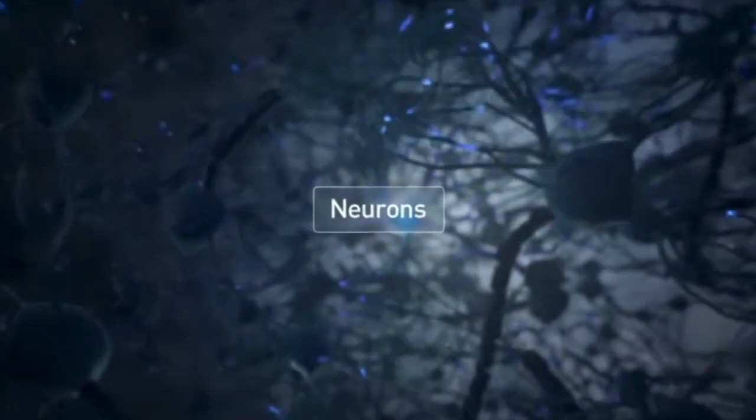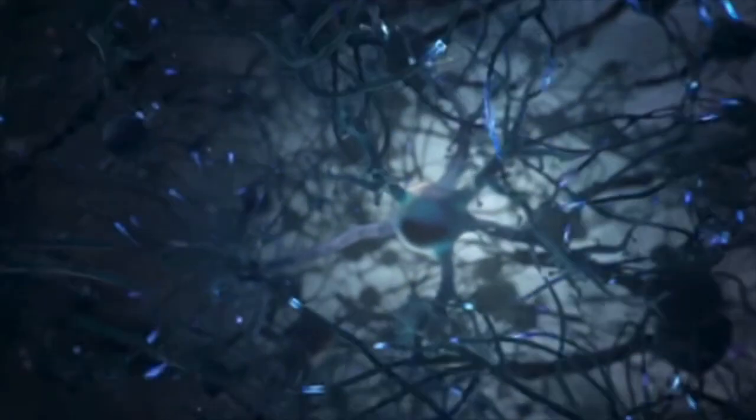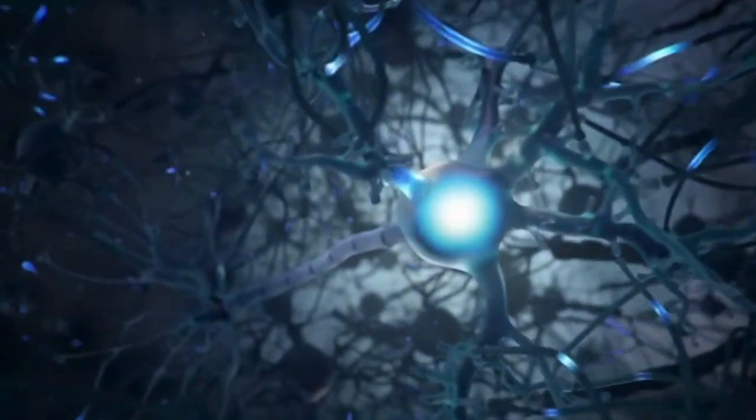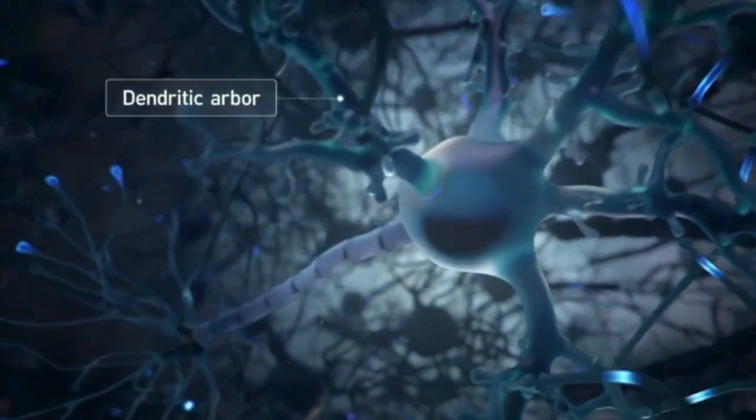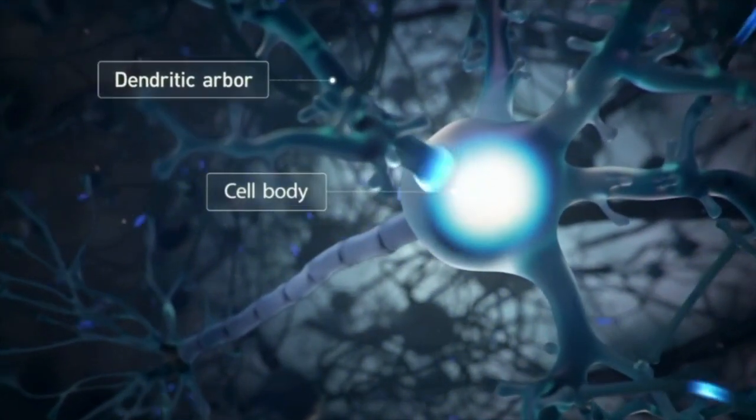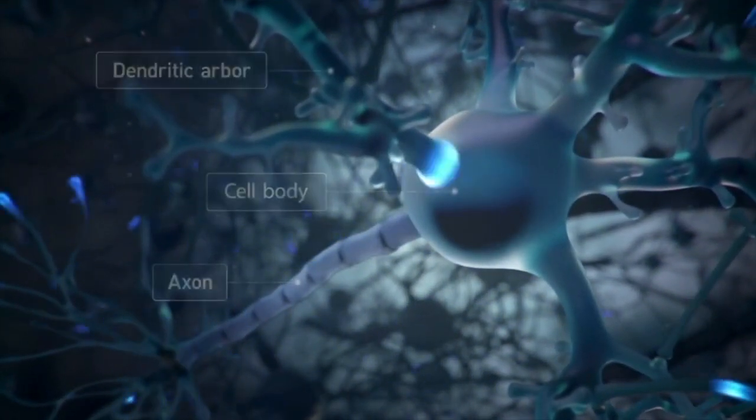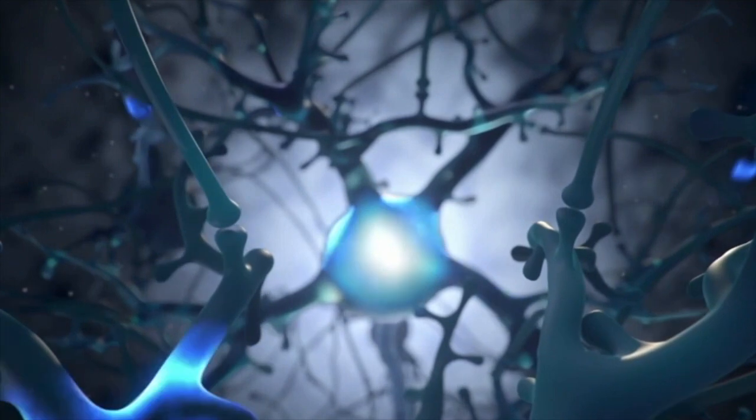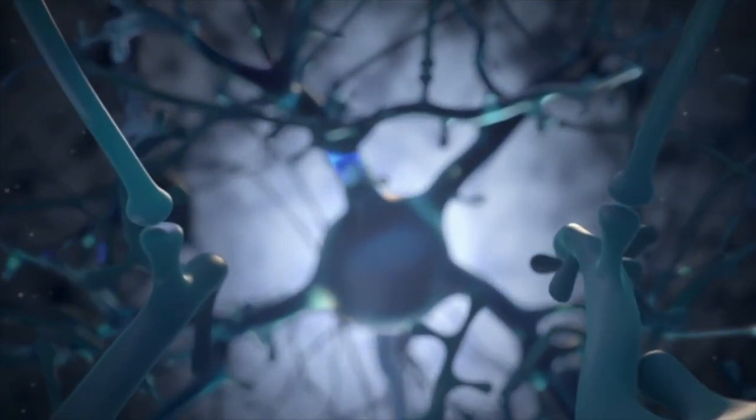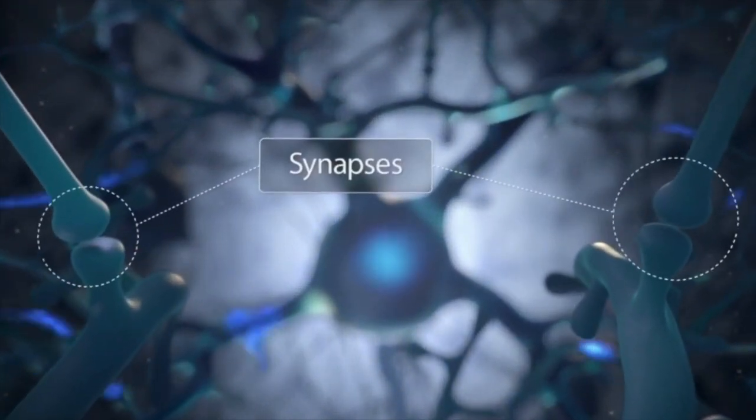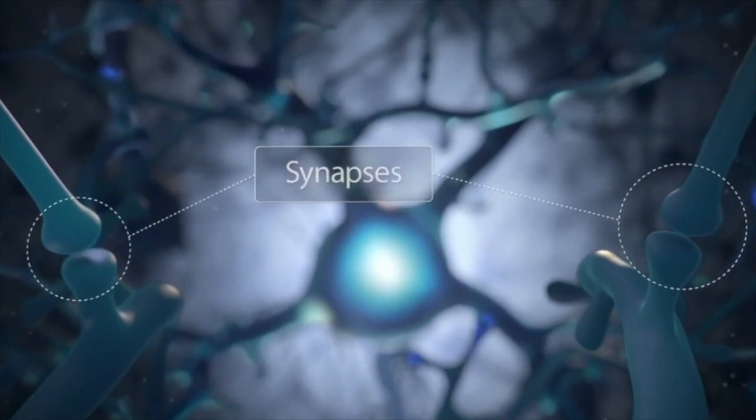The brain consists of nearly 100 billion cells called neurons. Neurons come in many complex shapes, but generally they have a dendritic arbor, a cell body called a soma, and an axon. The neurons of your brain connect to form a large network through axon-dendrite junctions called synapses.